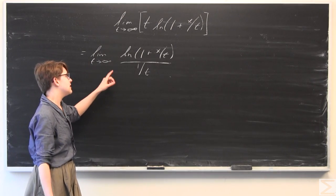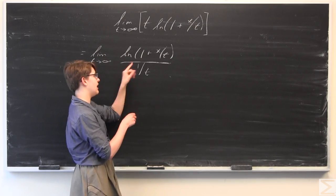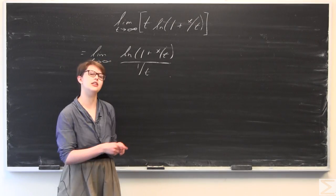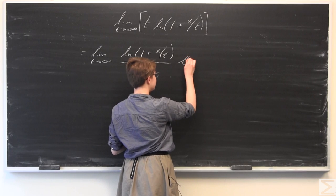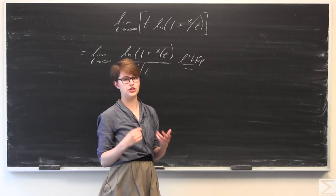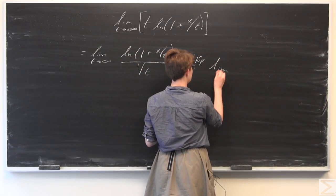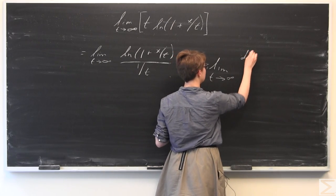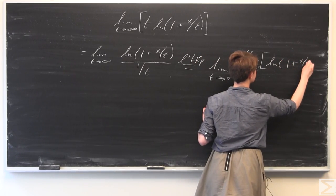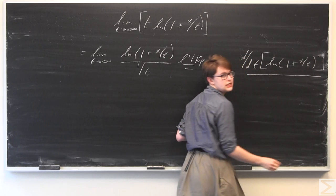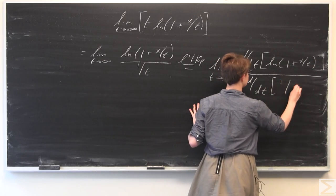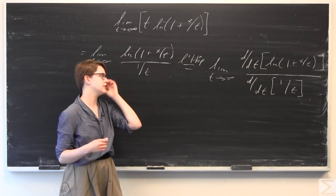Now if we try to evaluate the limit, we would get 0 over 0. But since we have something of this form, we can use L'Hôpital's rule. We take the derivative of the numerator and the derivative of the denominator with respect to t, and then evaluate the limit again. So by L'Hôpital's rule, we differentiate the numerator and the denominator.